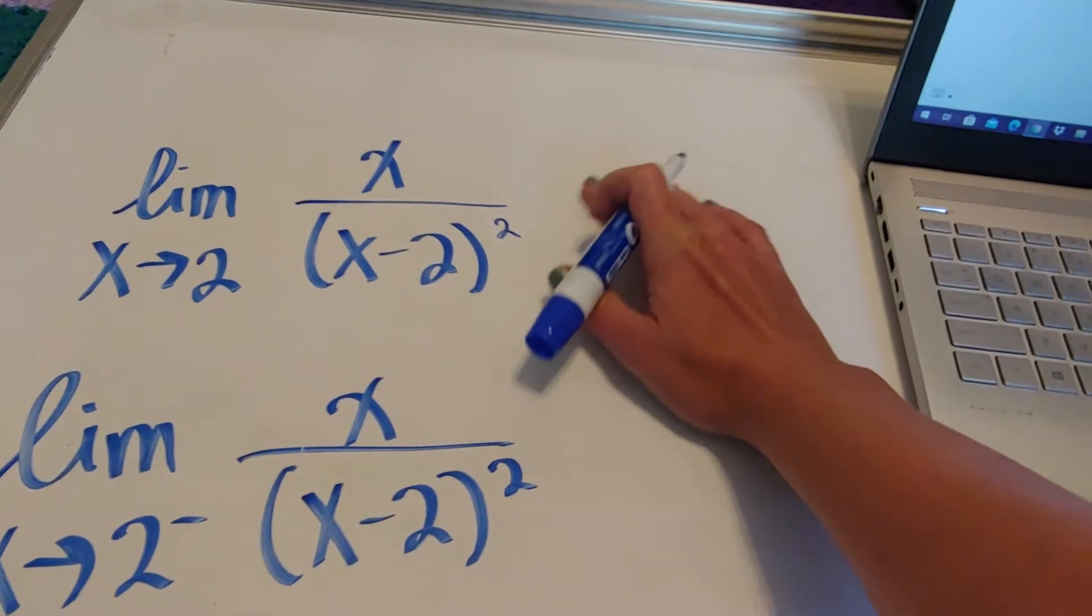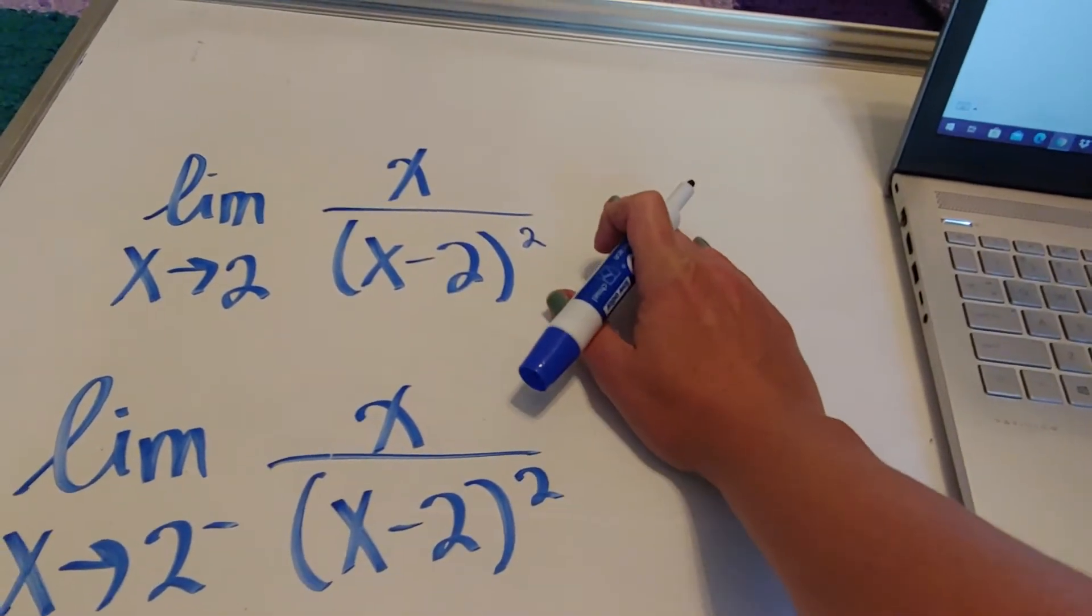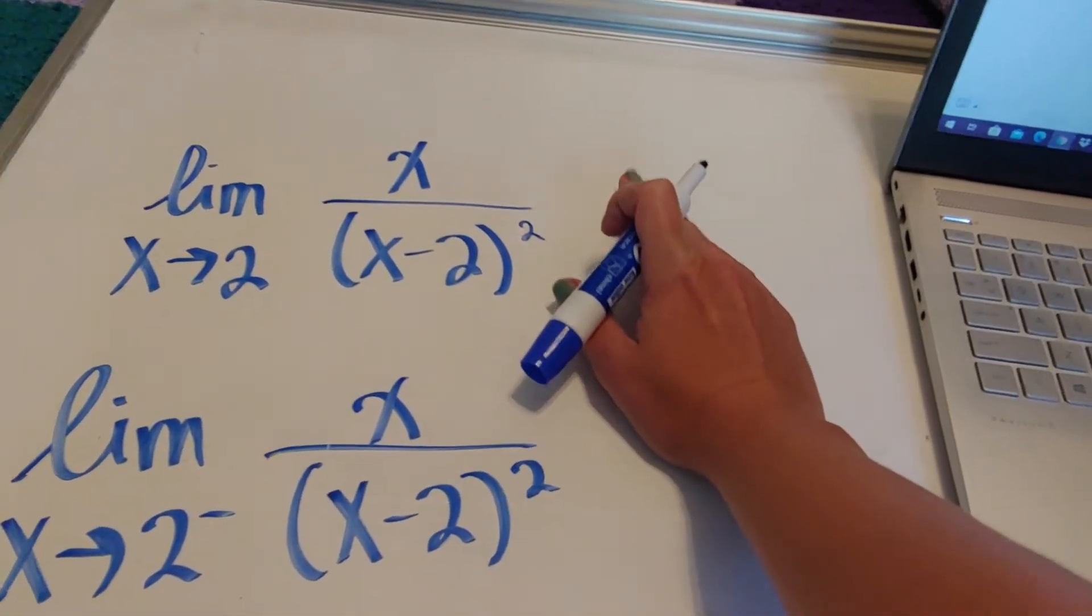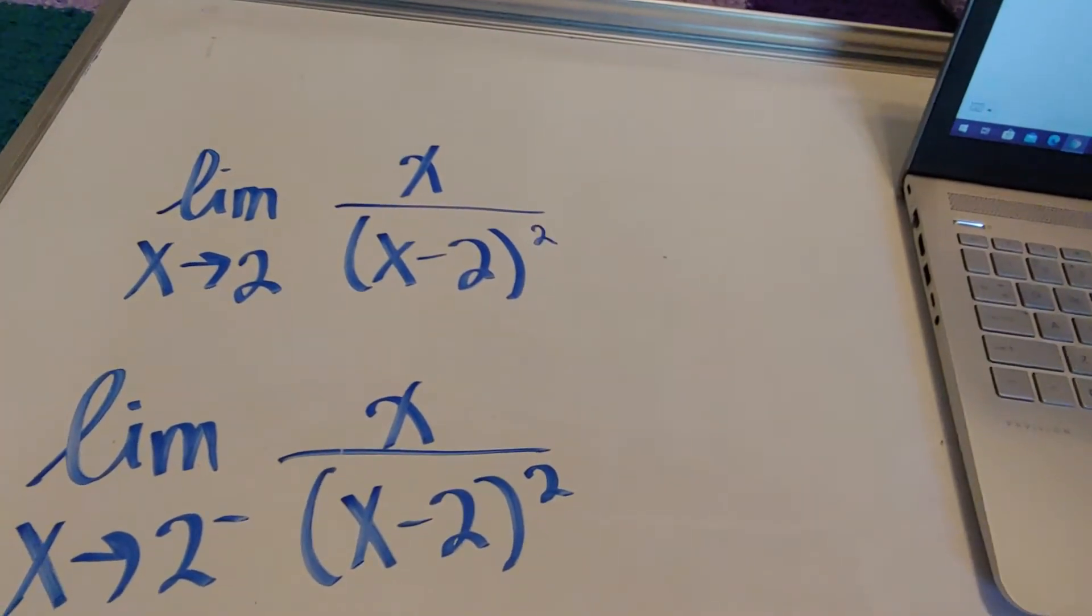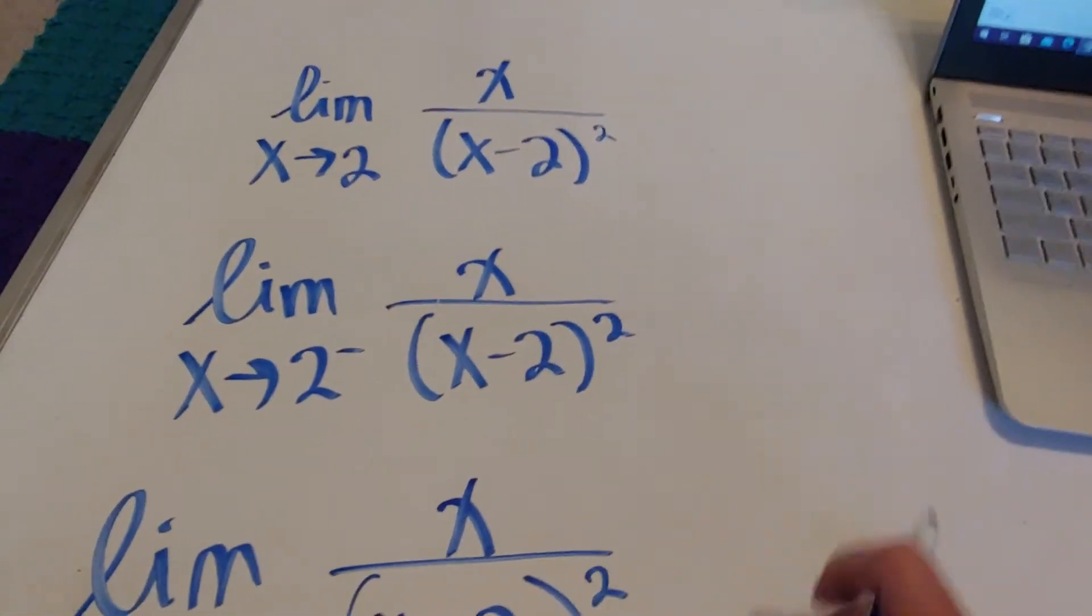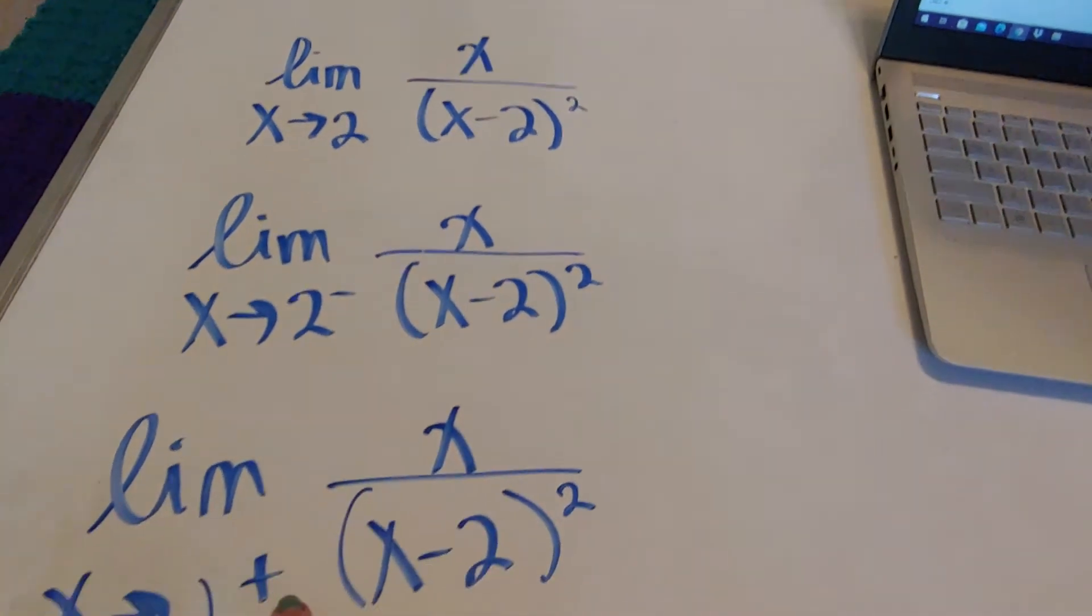In this video, we're going to talk about how to figure out what the answer should be by using graphing technology. So we're going to use Desmos. As you can see down here, I've got the left-handed limit and the right-handed limit.